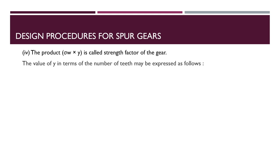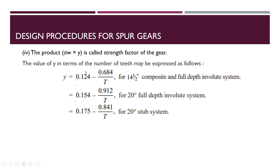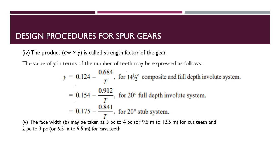The Lewis form factor Y is calculated based on the tooth system. For a 14.5° composite or full depth involute system: Y = 0.124 − 0.684/T. For a 20° full depth involute system: Y = 0.154 − 0.912/T. For a 20° stub system: Y = 0.175 − 0.841/T, where T is the number of teeth. The face width b can be taken as 9.5m to 12.5m for cut teeth, and 6.5m to 9.5m for cast teeth, where m is the module.